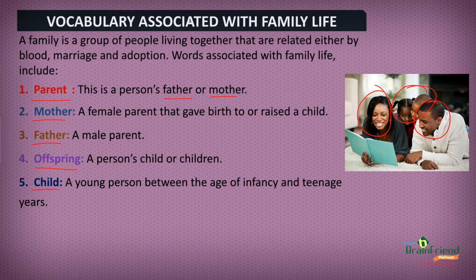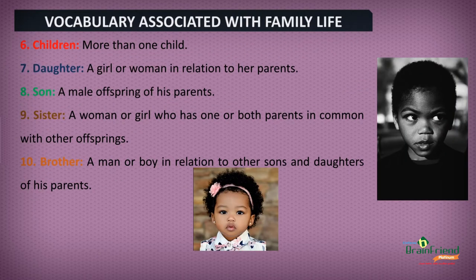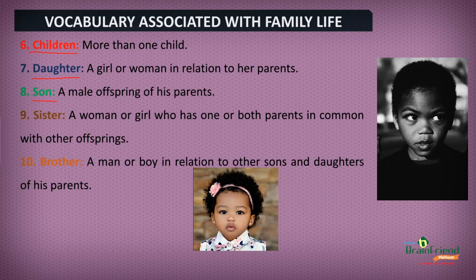Next, we have Daughter — a girl or woman in relation to her parents. On the other hand, a Son is a male offspring of his parents. Next, we have Sister — a woman or girl who has one or both parents in common with other offsprings. The Brother, on the other hand, is a man or boy in relation to other sons and daughters of his parents.